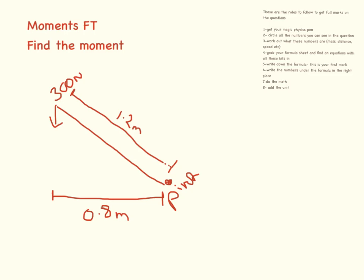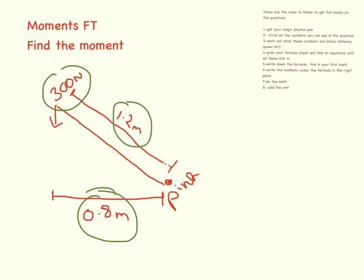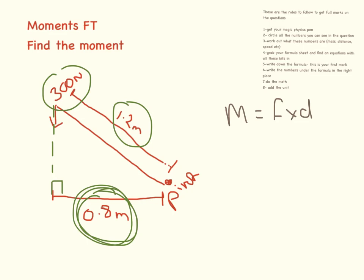This is our next question. The first thing we do is circle all of the numbers. They've been a bit tricky here because they've given you two distances. The distance we need to use is the perpendicular distance to the pivot, not the length of the lever. So we write down our equation: moment equals force times distance. Our force is 300 Newtons and our distance is 0.8 meters, giving 300 times 0.8 equals 240 Newton meters.